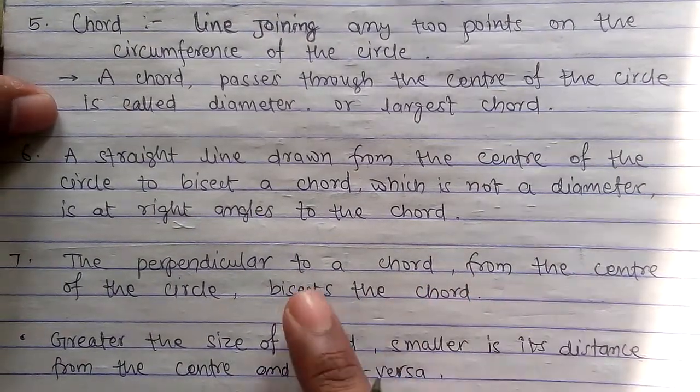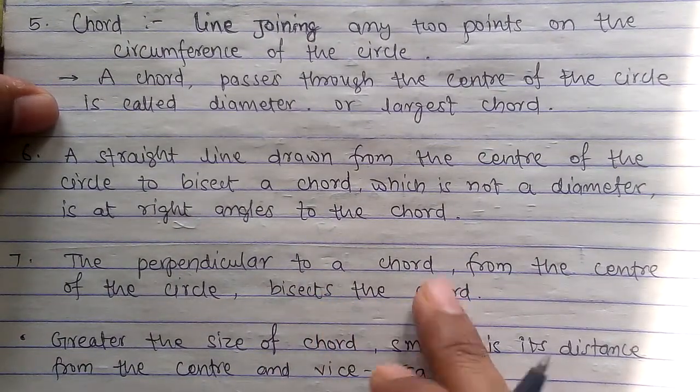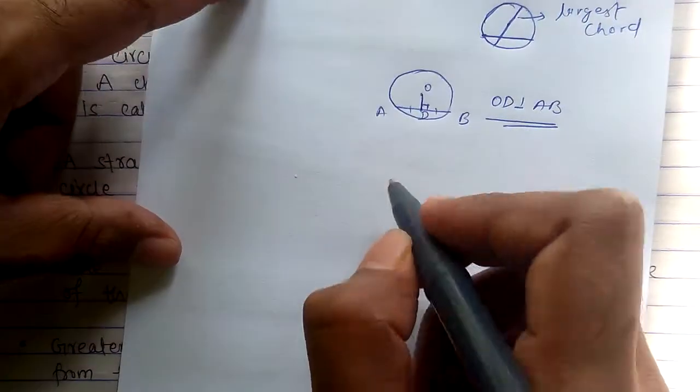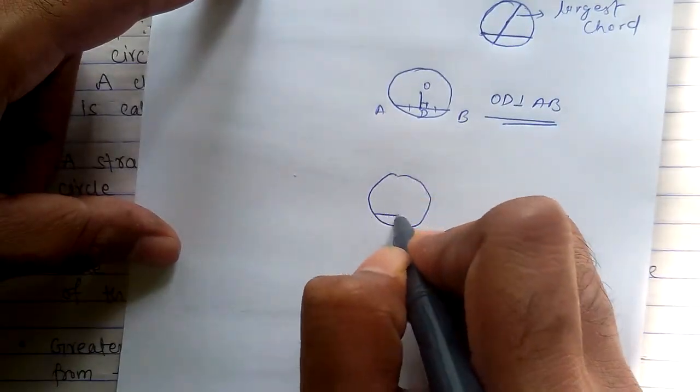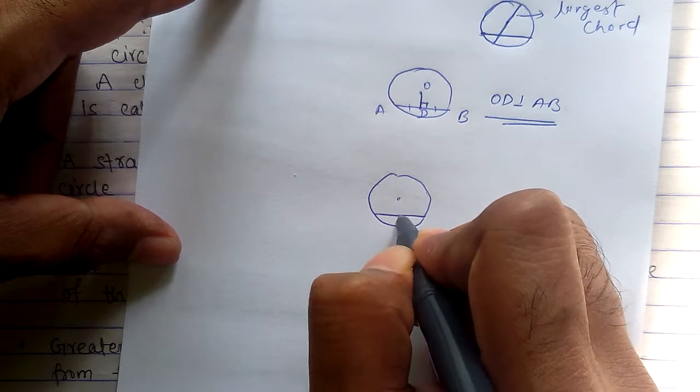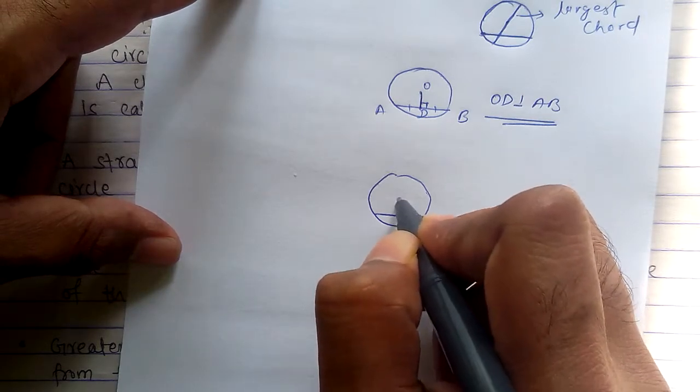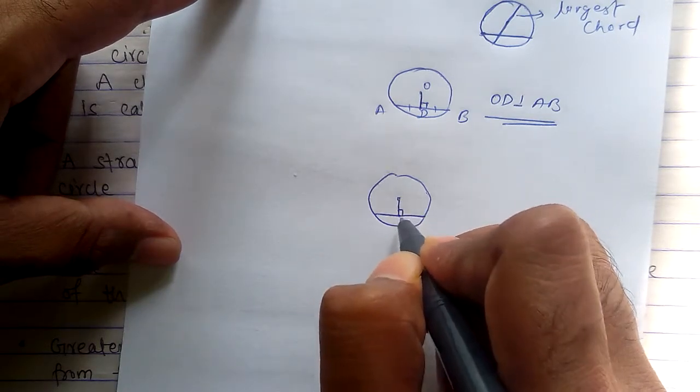Perpendicular from the center of a circle bisects the chord. If you have a circle and you have a chord, draw a perpendicular from the center, it will bisect the chord.